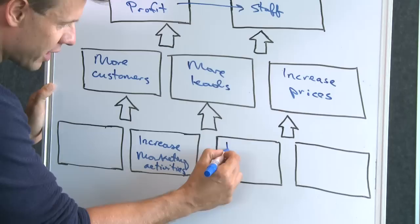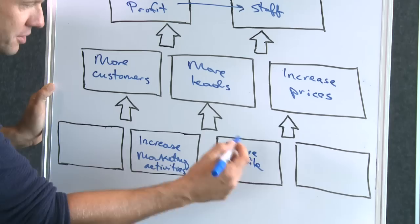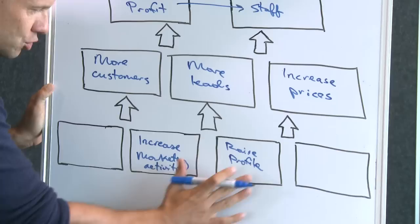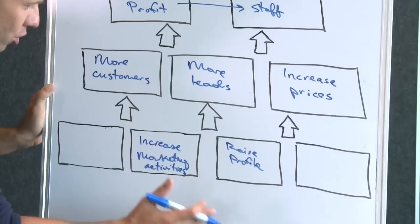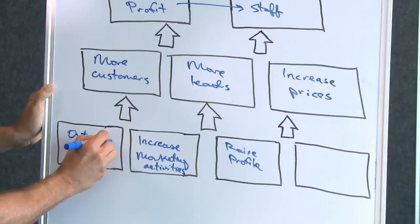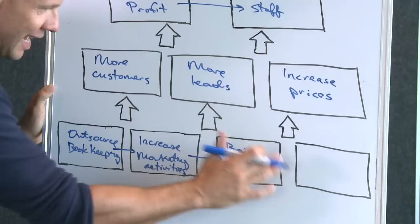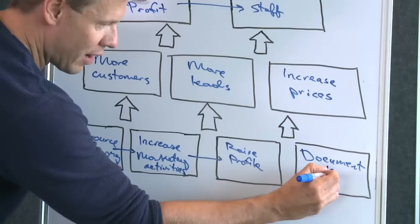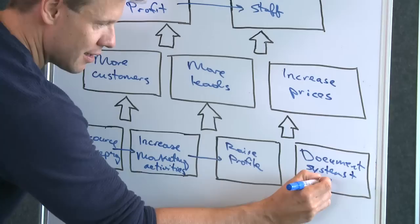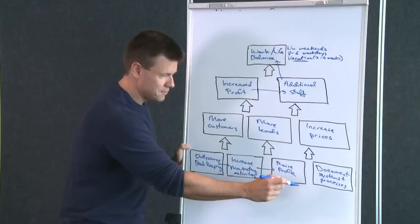We also need to raise the profile of the business to build more awareness, visibility, and credibility. John is going to have to do some of these things at the beginning himself because he doesn't have additional staff yet. One thing eating up his time is bookkeeping, so let's outsource the bookkeeping — that doesn't cost a lot and will free up time for him to work on these other areas. I also want John to start documenting his systems and processes around how he conducts his business and marketing.